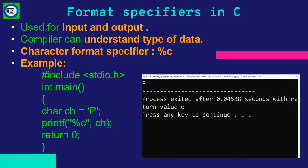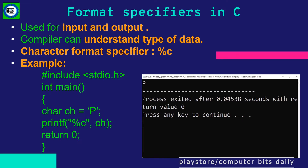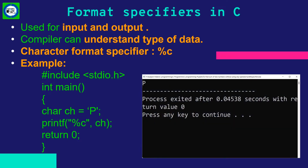Format specifiers are typically used in C for input and output purposes. Using this approach, the compiler can identify the type of data in a variable. %c is the character format specifier. In this example, we have taken a character type variable ch with value 'p' and passed this variable as an argument in the printf function. The output of this program is 'p'.